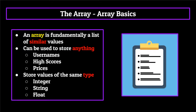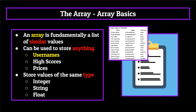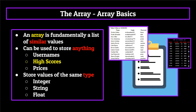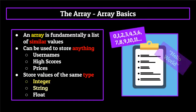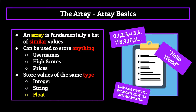An array is fundamentally a list of similar values grouped together in a central location. We use data structures to store sets of similar information so that we can easily use that information. Arrays can be used to store anything — usernames for an app, high scores for a video game, prices for an online shop — pretty much any list of values which are fundamentally similar, meaning of the same type: integers, strings, floats, objects, and so on. Any primitive or advanced data type you can think of can be stored within an array.